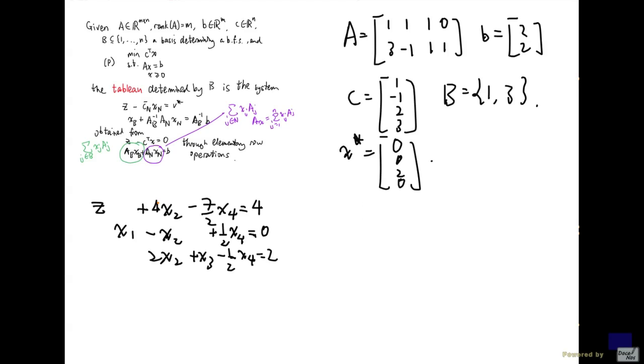So, if I rewrite the z row so that all the variables except z are on the right, I will have z equal to 4 minus 4x_2 plus 7 over 2 x_4.